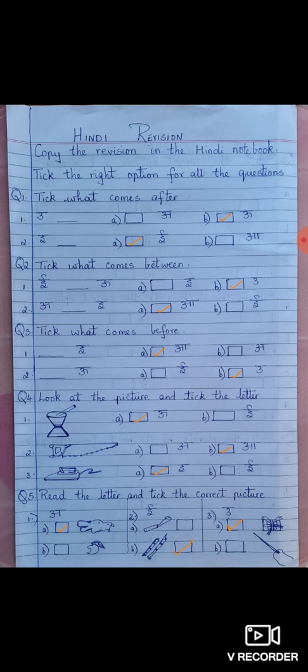Question 5 Read the letter and tick the correct picture. A. Two pictures are given ADRAK And AAM. So which is the correct picture you will tick for A? It is ADRAK. So option A. You will put a tick mark in the box. Second E.